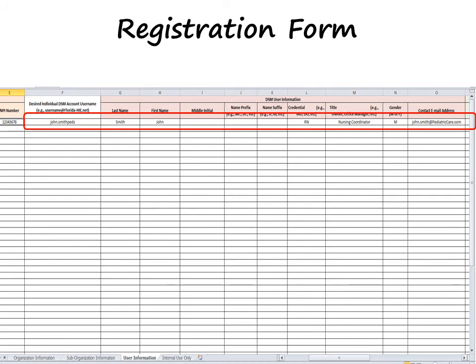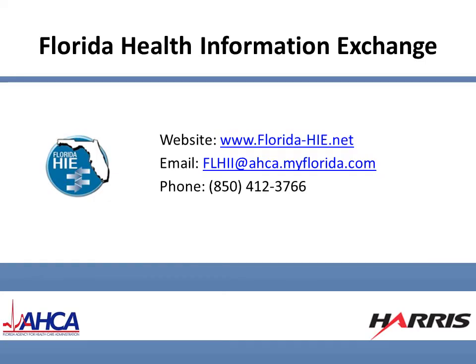Whether you are registering a licensed provider or another user type, it is important to remember to include a username for each individual and to include a contact email address for each user. This email is used to communicate the registrant's initial login information and to provide assistance in the case of a forgotten password. The contact email address must be different for each user. Once all users have been entered on the form, you will need to email it to the Florida Health Information Inbox at flhii@ahca.myflorida.com.